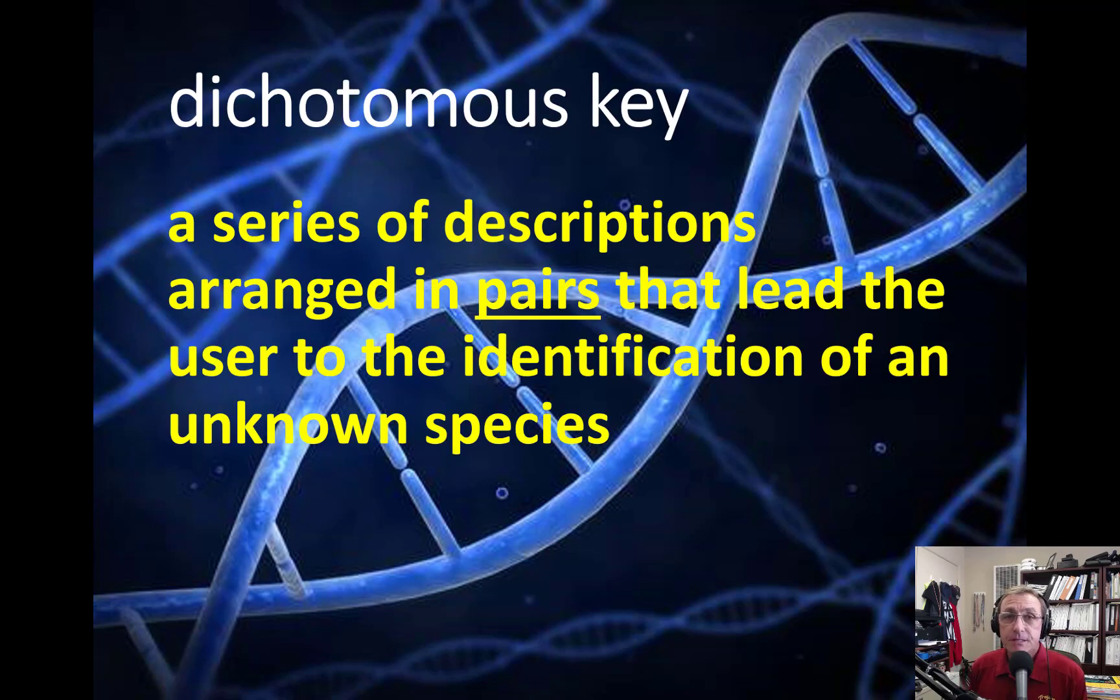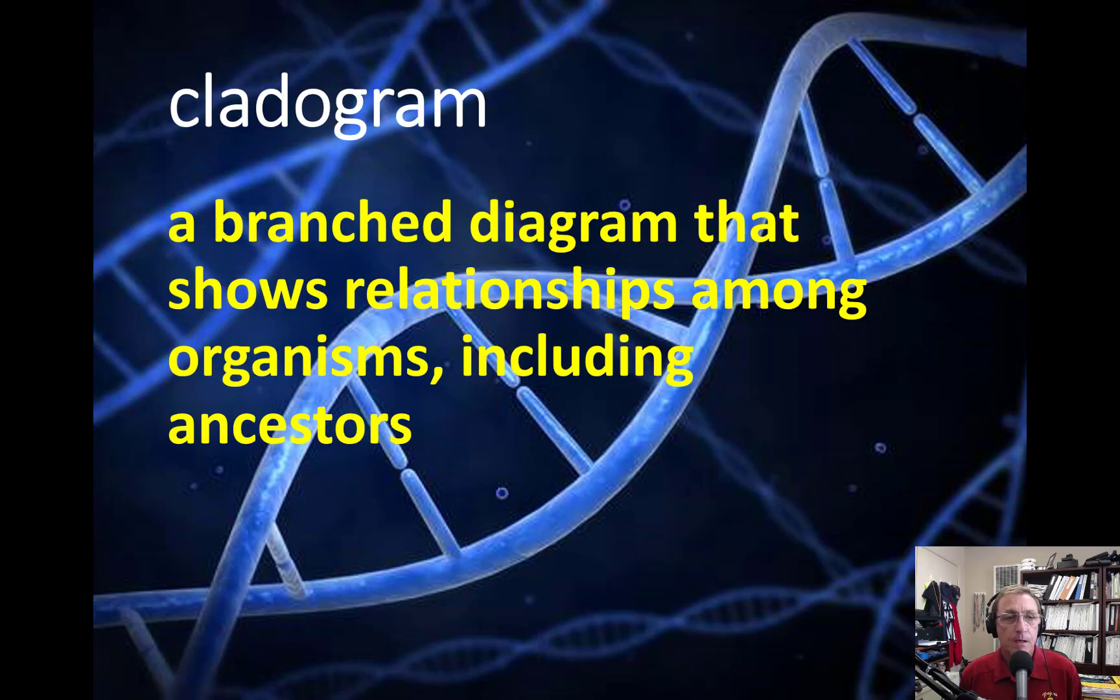Dichotomous key. This is a series of descriptions, arranged in pairs, that lead the user to identify the identification of an unknown species. So it helps you, helps scientists, help people who are trying to sort out what something is, helps them figure out what that something is. Cladogram. We haven't used this word much. We talked about it briefly in class, but this is a branched diagram that shows relationships among organisms, including which common ancestors.